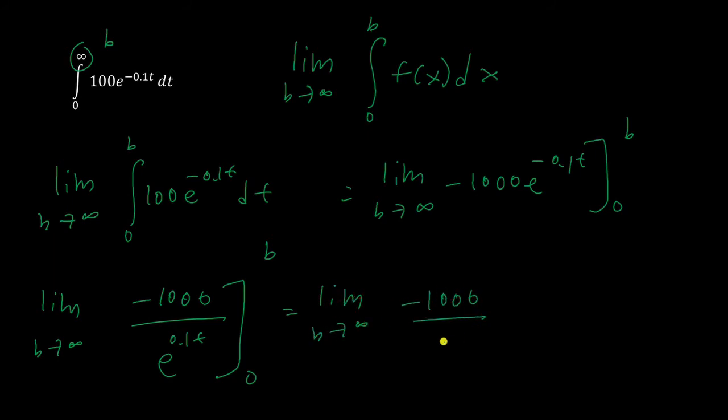That's going to be negative 1000 over e to the 0.1b, and then that's going to be plus 1000. As b goes to infinity, what happens to this left part here? Well, it's going to be negative 1000 over infinity, which will go to 0. So that part goes to 0, and we're left with 1000 as our answer.